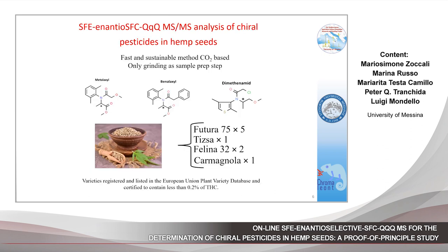The method can be considered as a proof-of-principle study, focused on the development of an environmentally friendly online analytical method — supercritical fluid extraction, supercritical fluid chromatography, triple-quad mass spectrometry — for the characterization and enantioselective determination of chiral pesticides in hemp seeds. In this respect, metalaxil, benalaxil, and dimethenamide were searched in nine hemp seed samples belonging to four varieties of Cannabis sativa. The selected varieties are registered in the EU Plant Variety Database and certified to contain less than 0.2% THC.